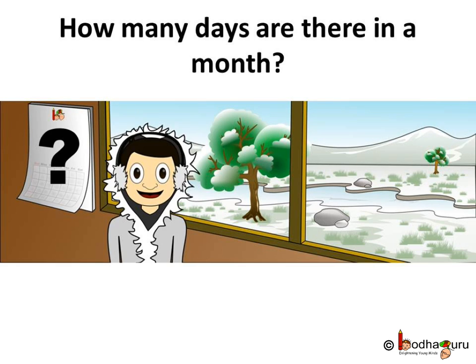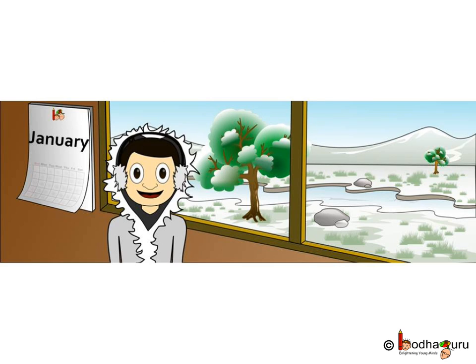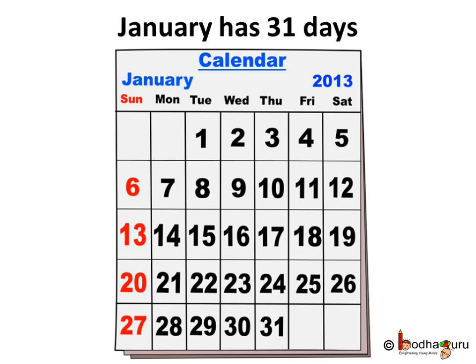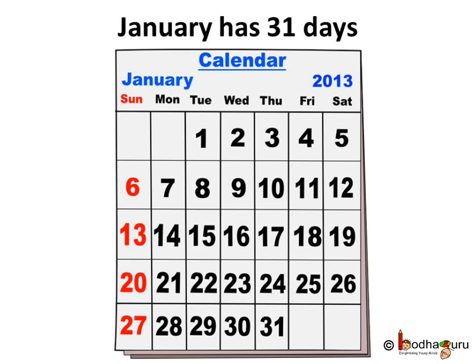Now the question comes: how many days are there in a month? Let us see the January month on the calendar for the year 2013. How many days are there? Look — 1, 2, 3, 4, 5, 6, 7 till 31. So there are 31 days in the month of January.